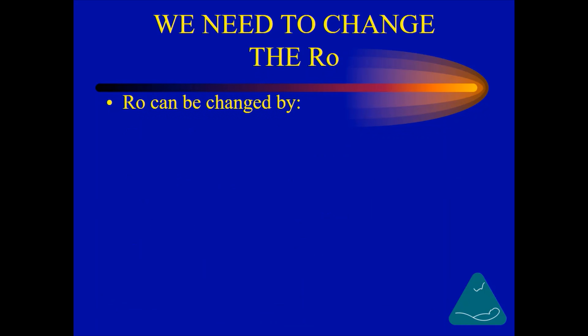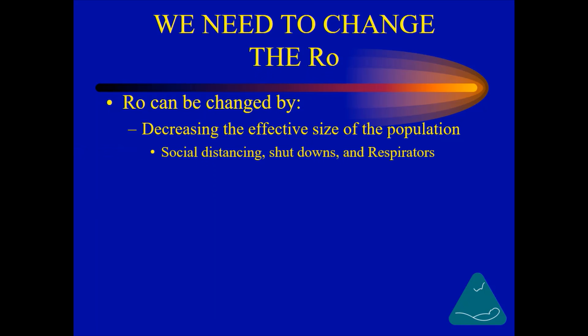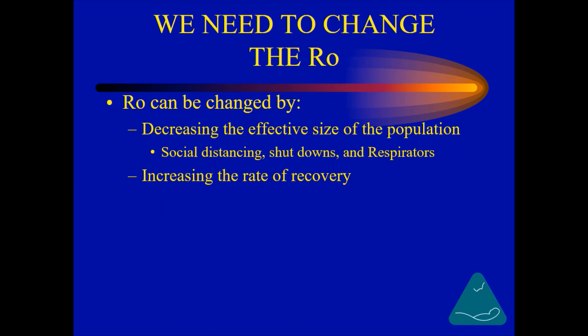So, based on an understanding of what affects the R0, the R0 can be changed by decreasing the effective size of the population. How do we do that? We're already doing that. That is being done by social distancing, shutdowns, and respirators, which effectively decrease the size of the population that can be infected. Also, increasing the rate of recovery — we're trying to do that by finding new medical interventions that can shorten the course of the disease.